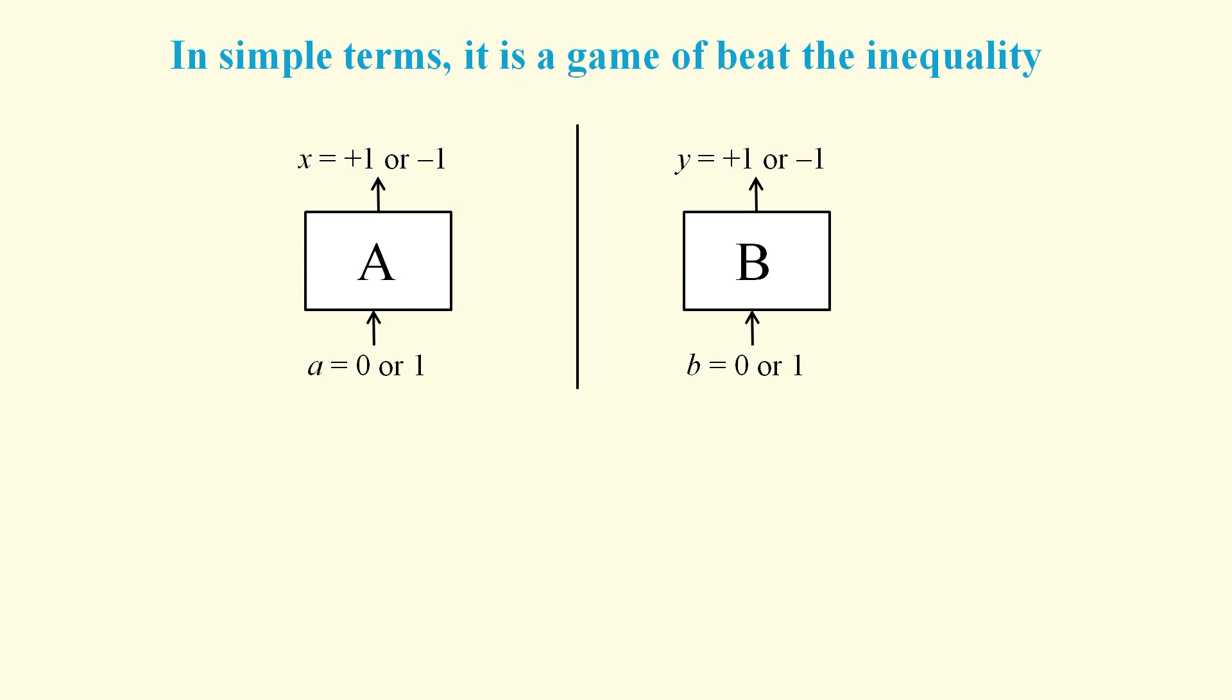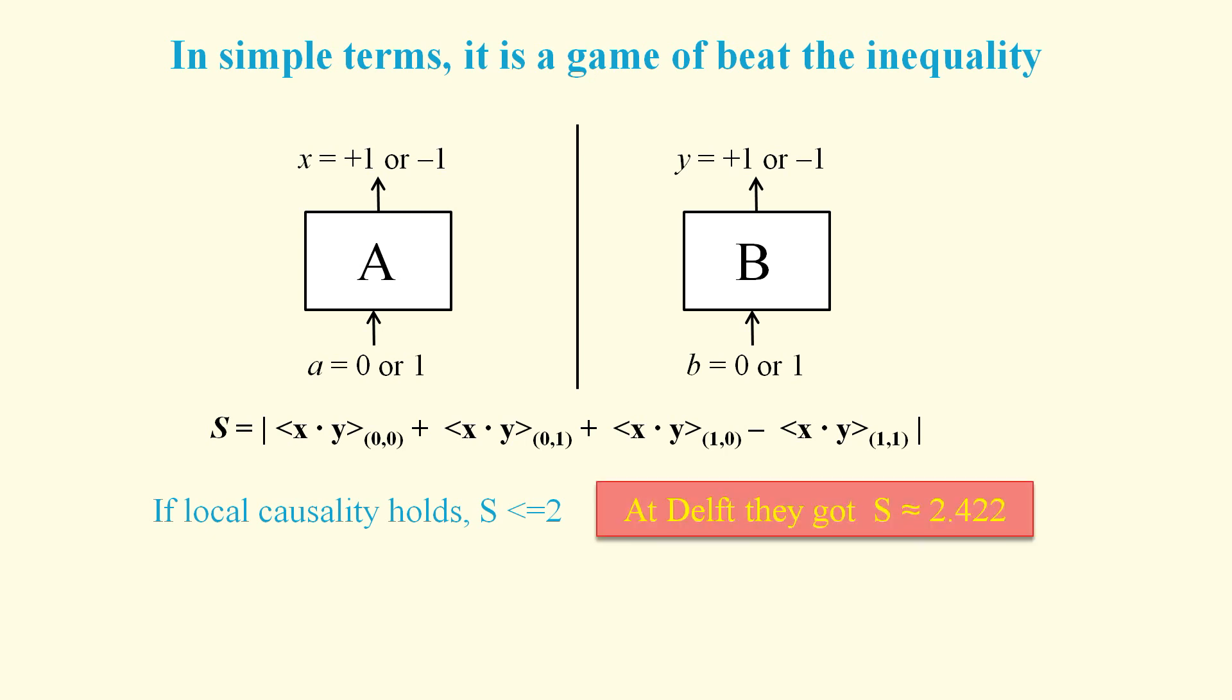As we get a reading every time, we can use the CHSH inequality, which is rewritten to support this scenario. The argument goes that local causality cannot explain a result of greater than 2, and at Delft they got a value of 2.422.